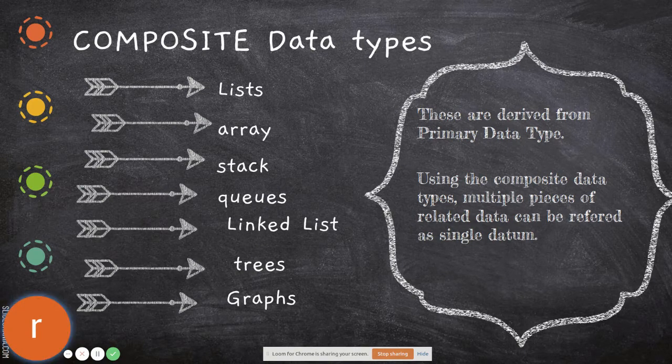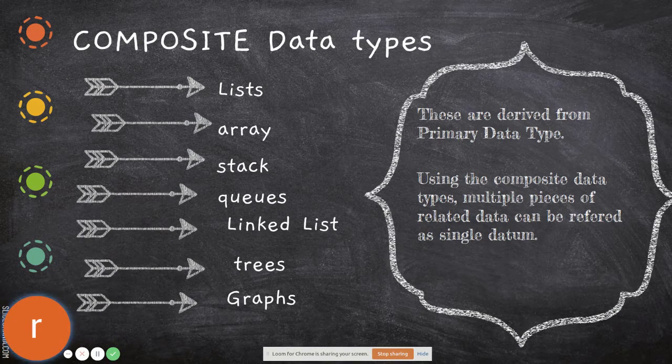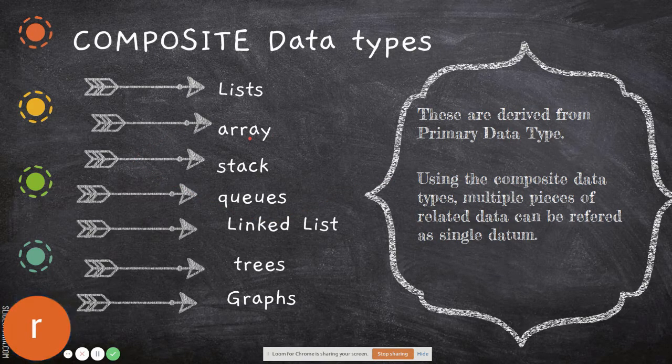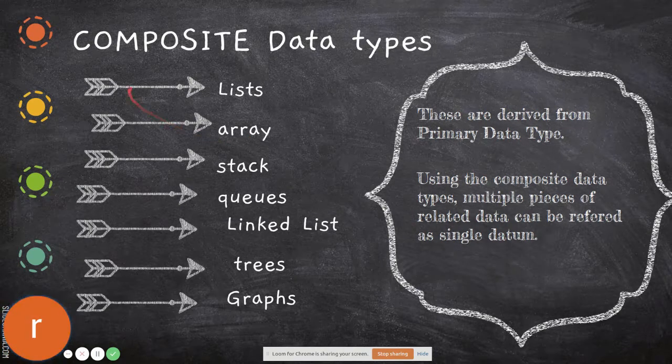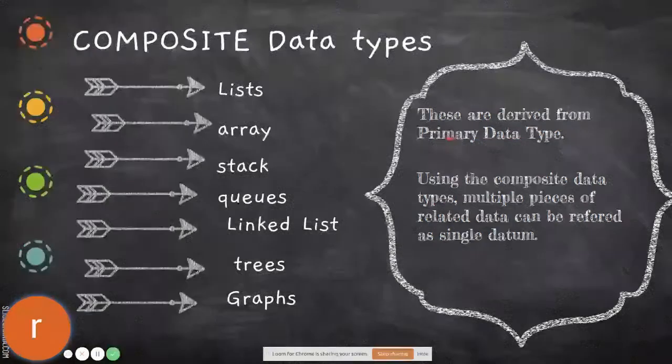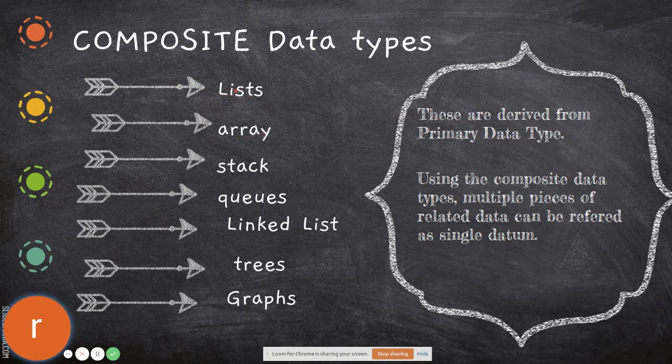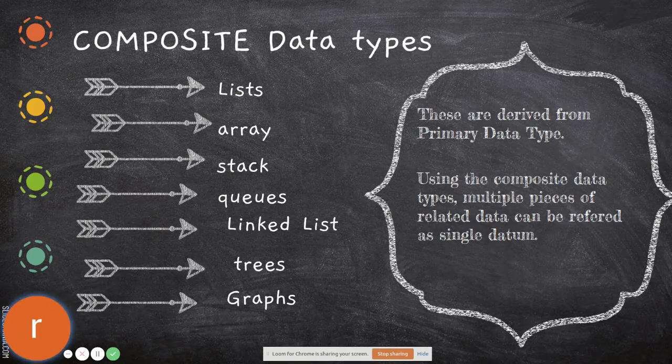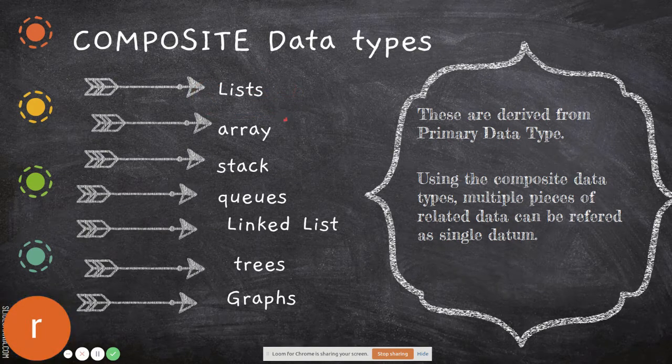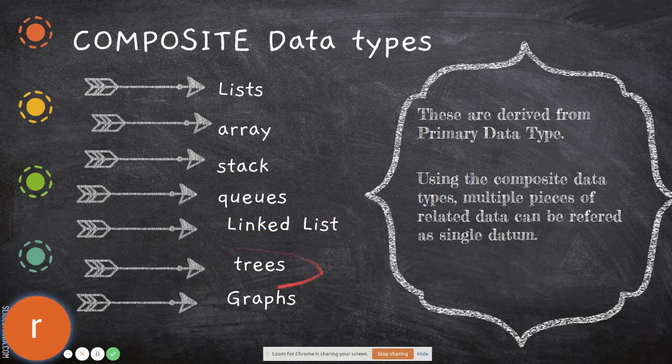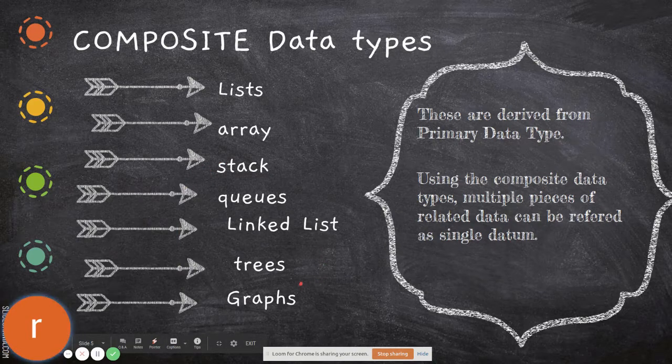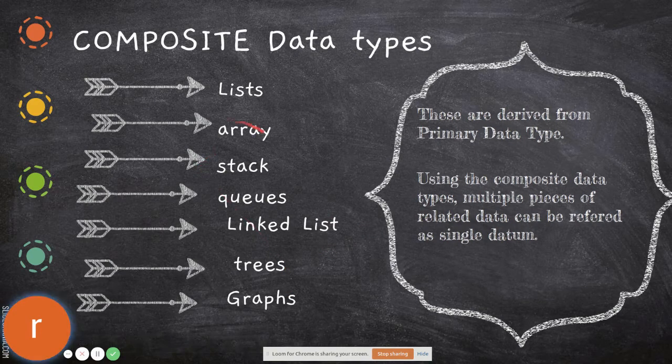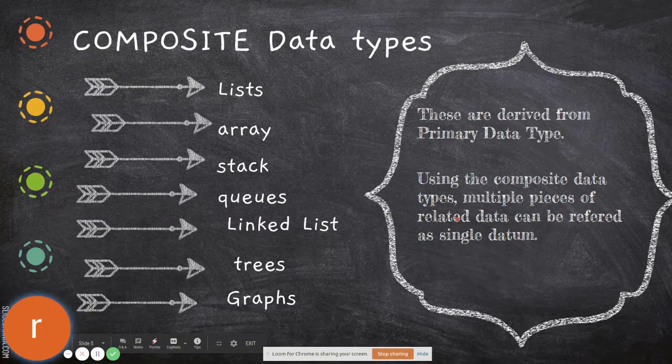When you say integer, it's a primary data type. Based on the primary data type, this array has been built - an array of integers, array of floating points, array of strings, and so on. These are derived from primary data types. Lists are similar - you can build a list using a pointer, which we saw as a primary data type, or using arrays. Then there are stacks, queues, linked lists, trees, and graphs. All these data structures are composite data types built from primary data types.